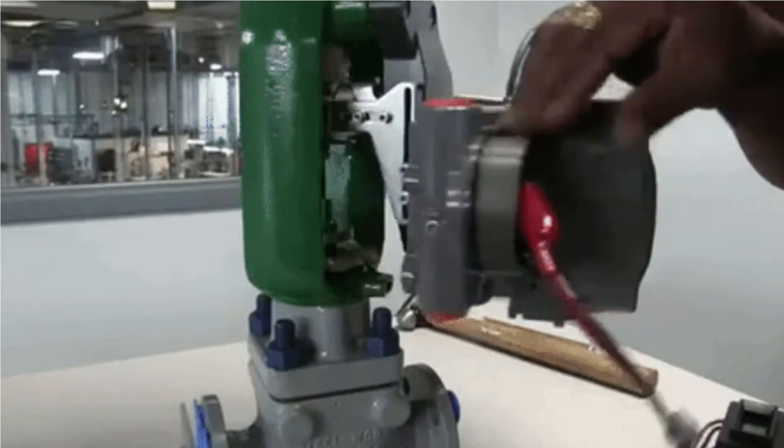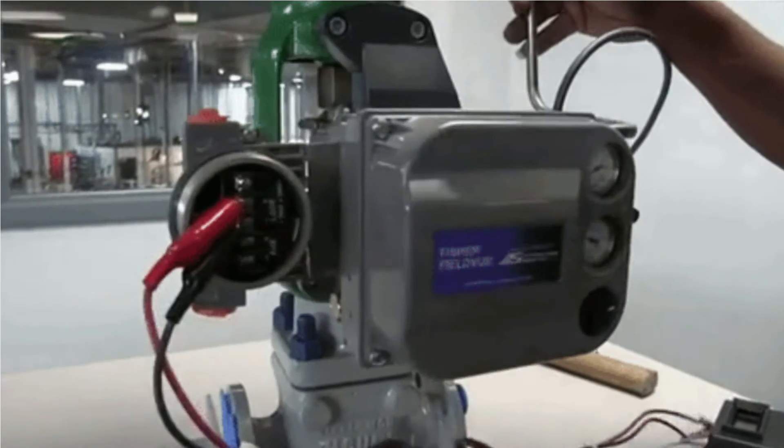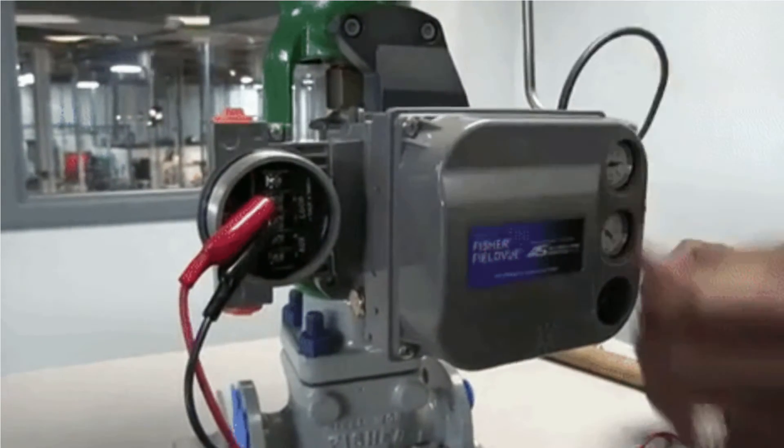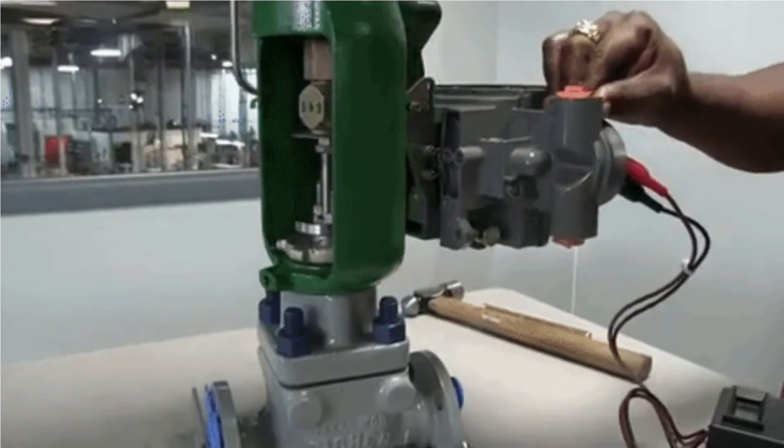These positioners would provide output power to the actuator. Control valves are moved to a specified position with the help of a positioner.